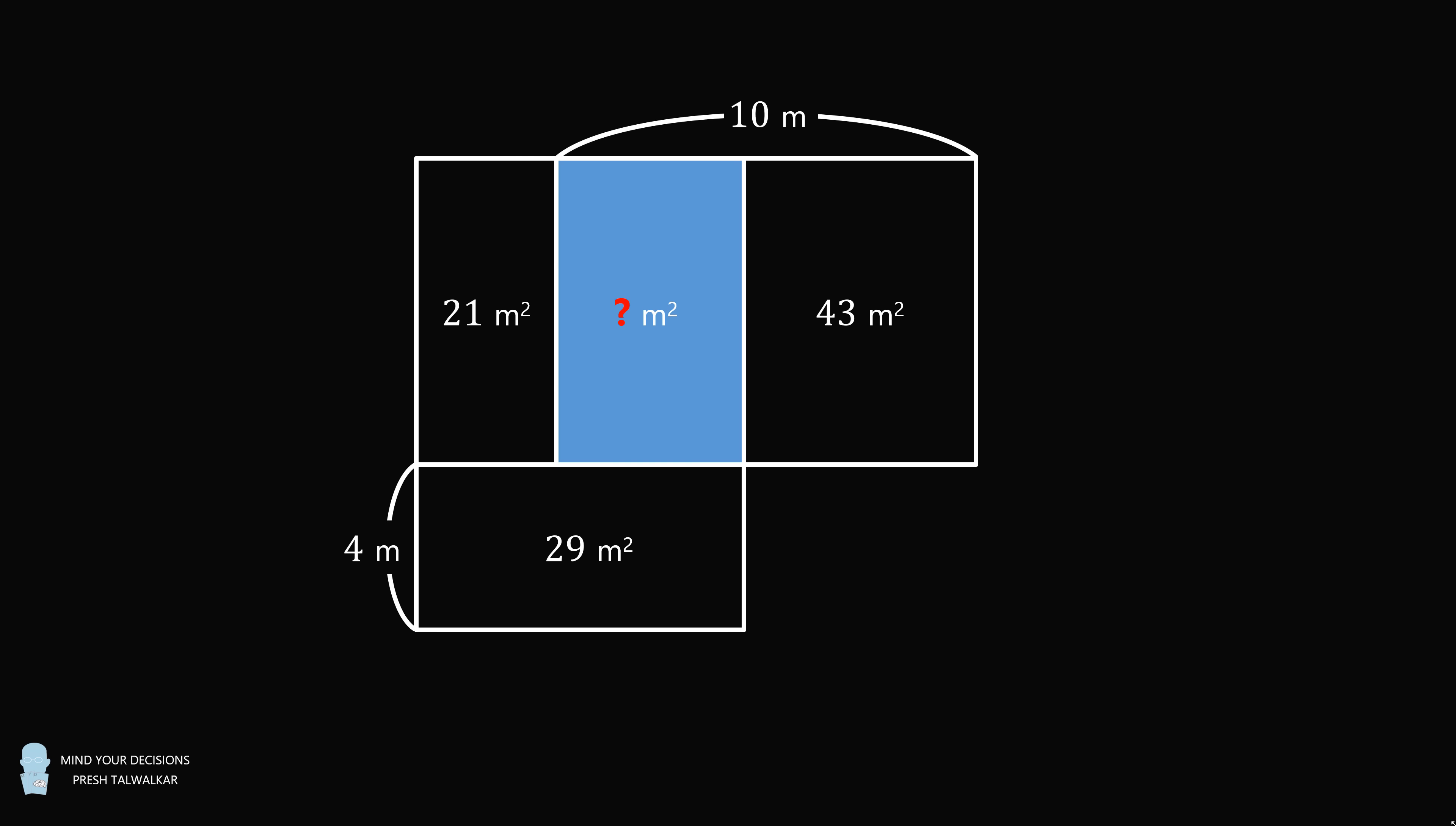Its height is 4 meters, and its area is 29 meters squared. You need to solve for the unknown area, which is the second rectangle in the first row.